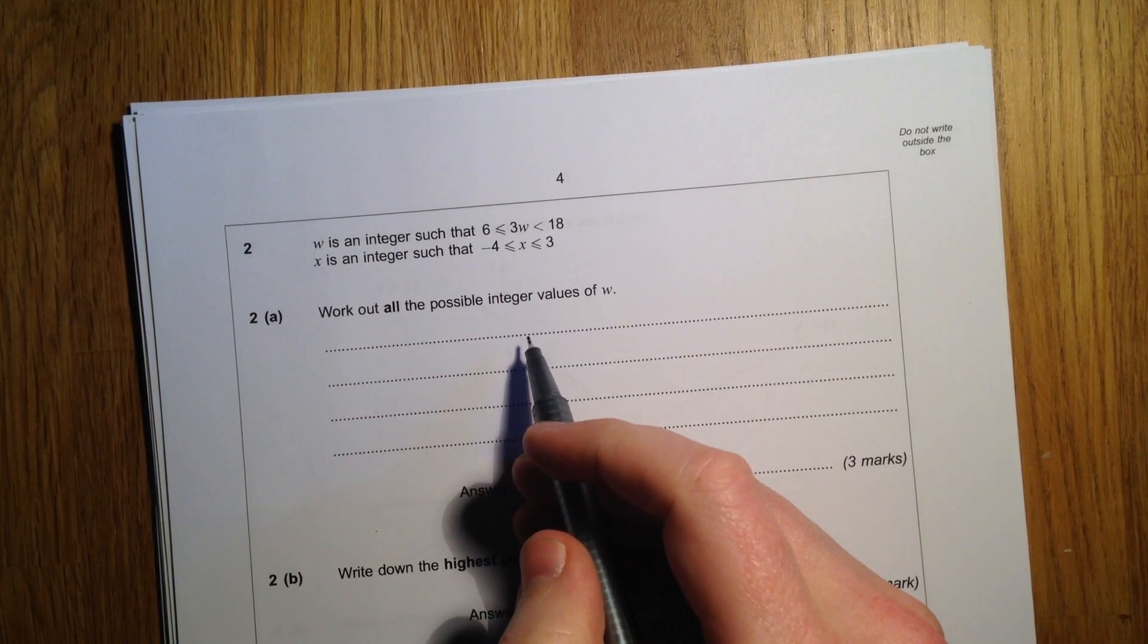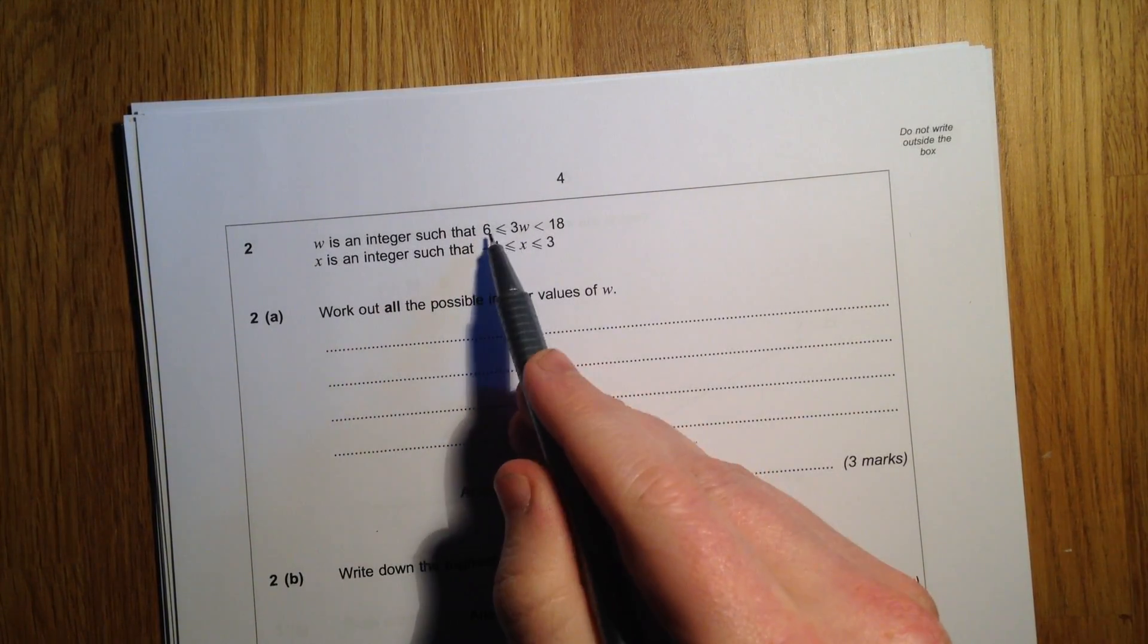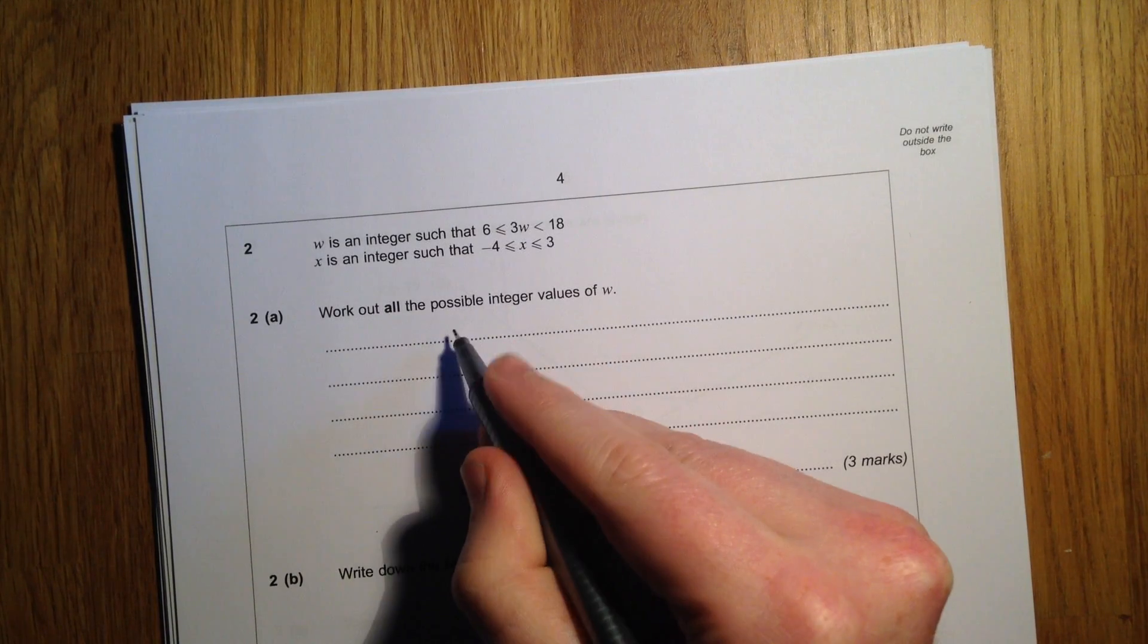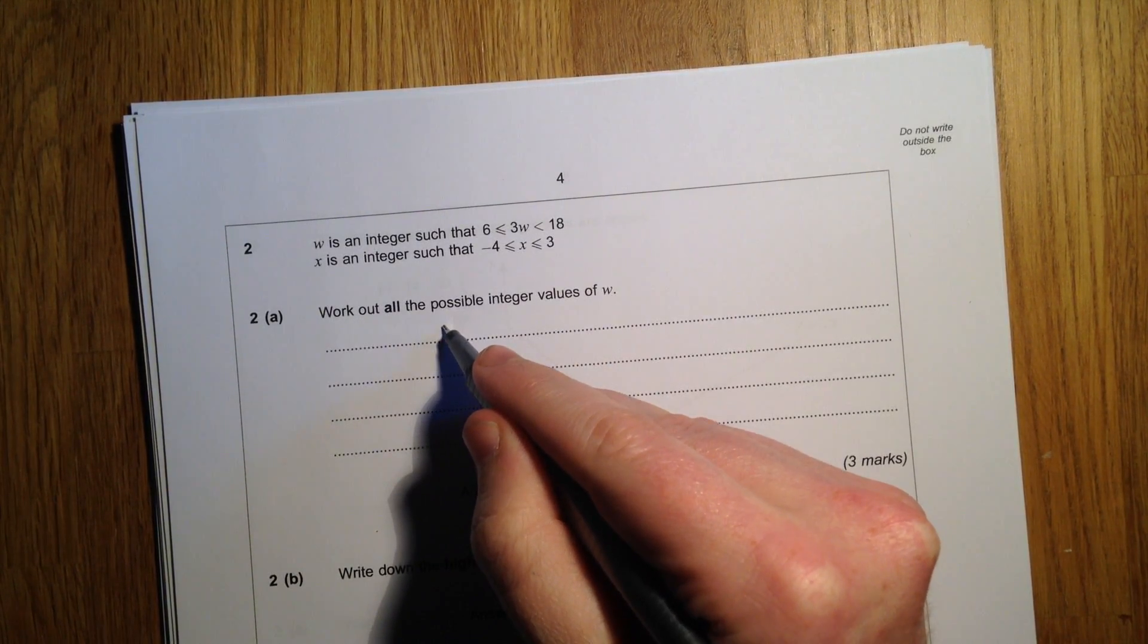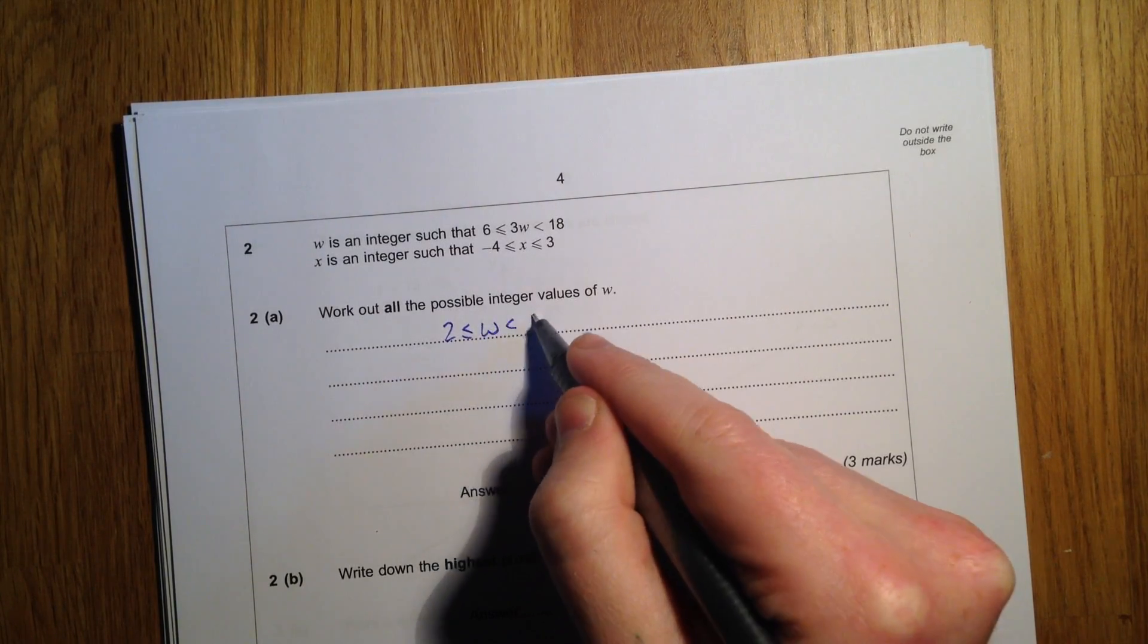Work out all the possible integer values of w on question 2. So first of all, we've got an inequality with 3w in the middle. If we divide everything by 3, we get 2 is less than or equal to w is less than 6.